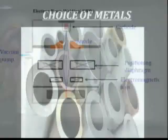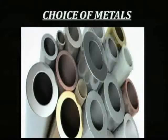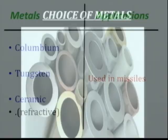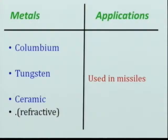The metals you can choose for this type of process are refractory materials like columbium and tungsten, which are used in missiles. The next group is reactive metals — barium, zirconium, and titanium — which are used in space shuttles.